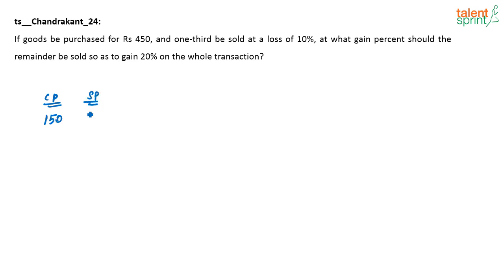A loss of 10% means what is the selling price here? It is sold at 90% of the cost. What is 10% of 150? That is 15. So this portion is sold at 150 minus 15, which is 135 rupees — denoting the 10% loss.